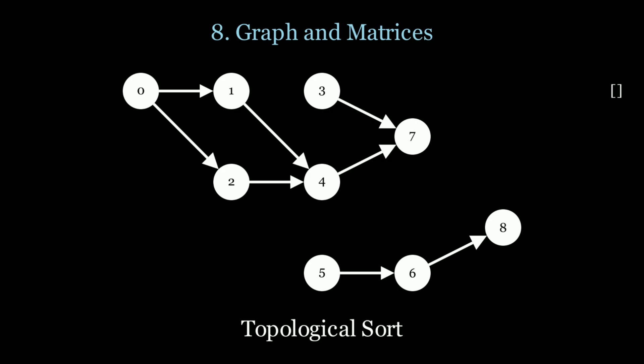Before we take node 1, we need to take node 0. Before we take node 7, we need to take node 3. In this approach we use DFS and keep track of the last nodes visited — those are added to the end of the list. Prerequisites are visited before.